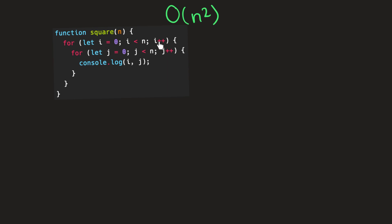For every iteration of this top for loop, we're also going to loop through a nested for loop. This nested for loop is doing the exact same thing — iterating through every number starting with zero up until n. Within this nested for loop, we're console logging the coordinates for a cell within a matrix. Instead of illustrating a console log of the index i and j, I'm just going to draw a square where those coordinates should be.